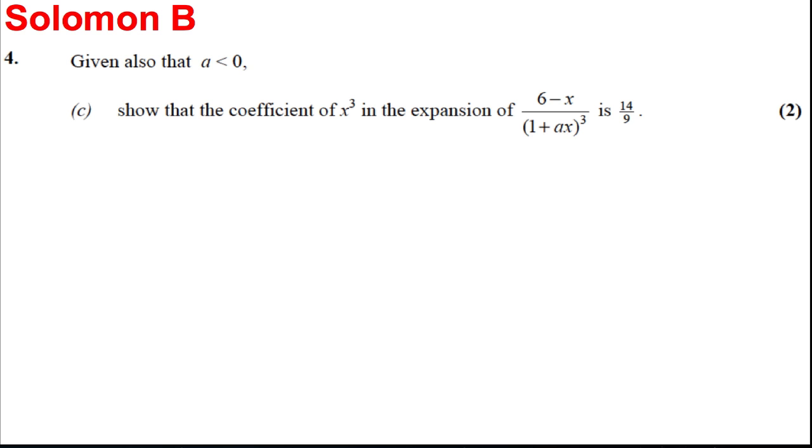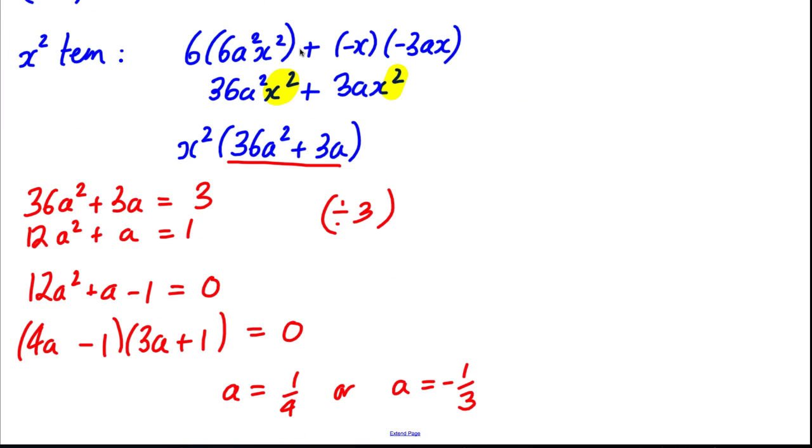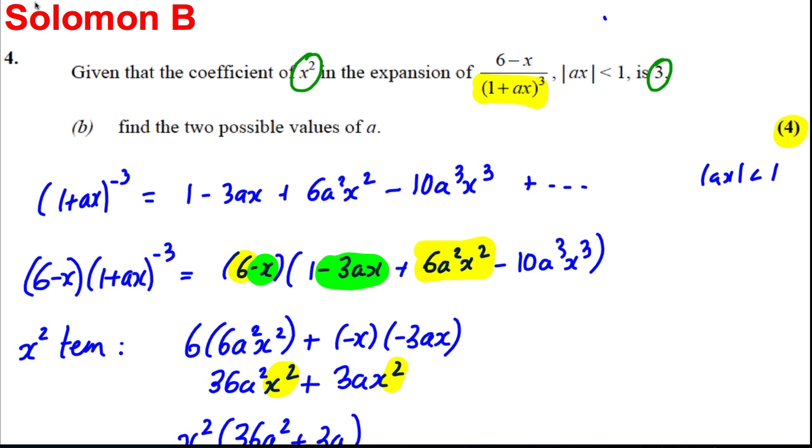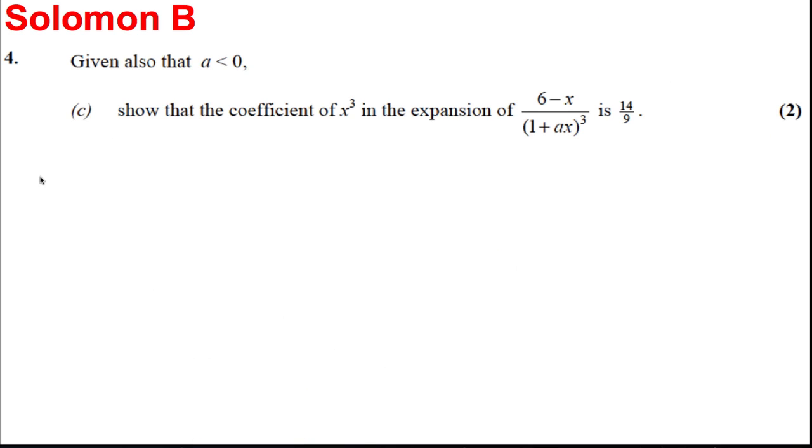Now the last part says given also that A is less than zero, so which A are we going to take? We're going to take A is negative a third. So this here tells us therefore that A is equal to negative a third and we ignore the other answer which is A equals a quarter because we want that A less than zero.